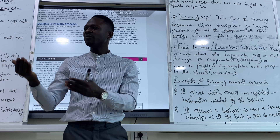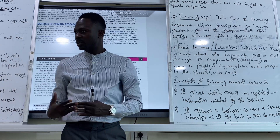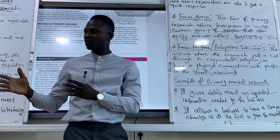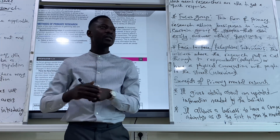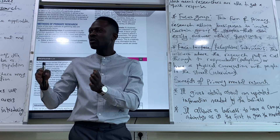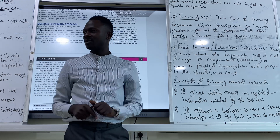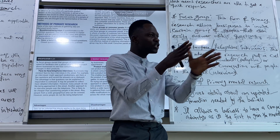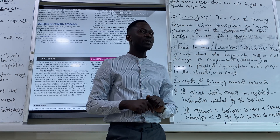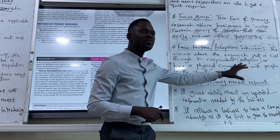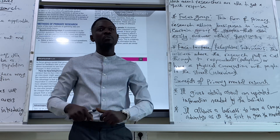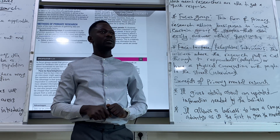For secondary research, you are using information from someone else. The problem is that the individual who carried out that research had their own purpose, and their purpose might not be the same as yours. It might have a relationship, but it might not be fully what you really needed. For primary research, whatever information you are gathering is information that is useful for the present situation of your company.